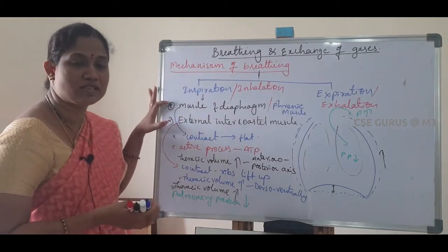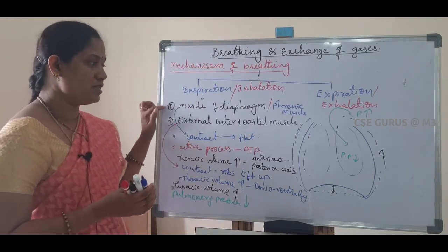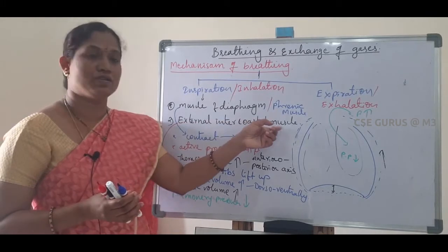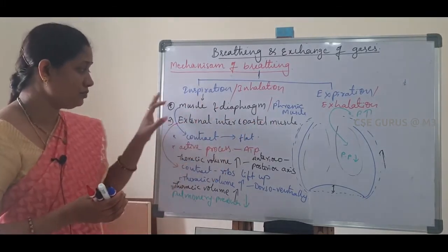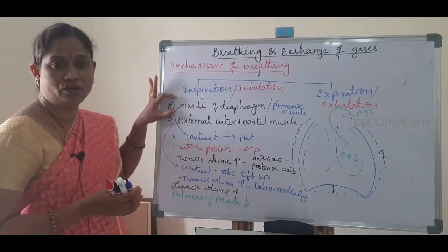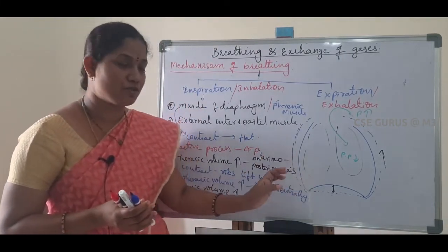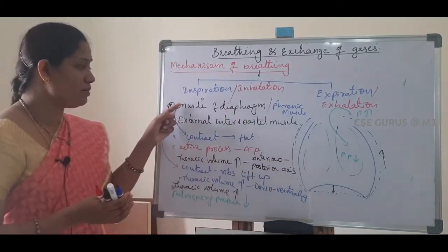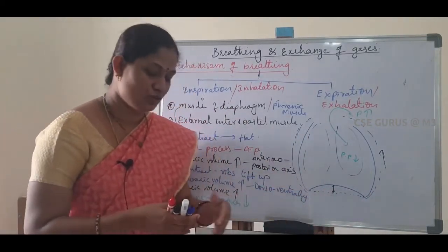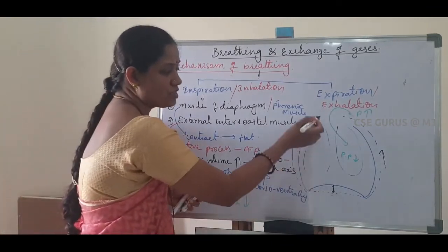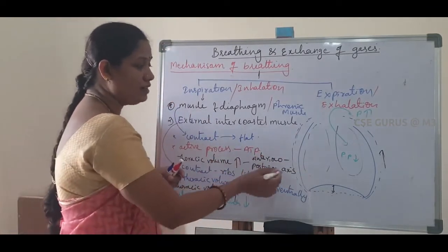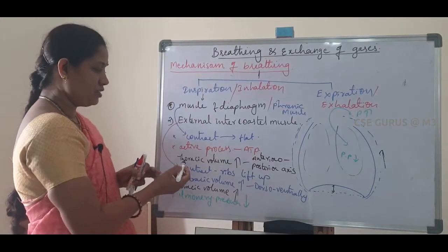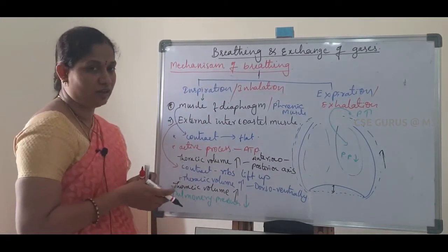To recap: two types of muscles play an important role — muscles of the diaphragm (also called phrenic muscles) and the external intercostal muscles. First, the diaphragm muscles contract. Normally the diaphragm is dome-shaped; when muscles contract it becomes flat, increasing the thoracic volume anteriorly to posteriorly.